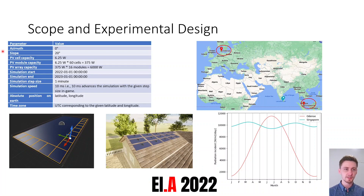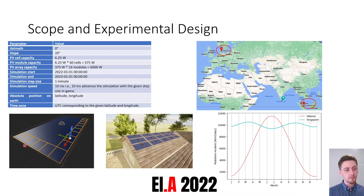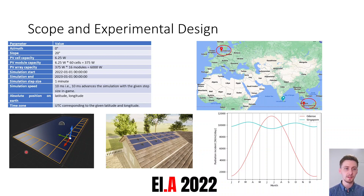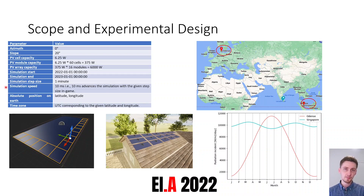The experimental design consists of a range of parameters. The azimuth was set to 0 degrees — true south by convention — which is optimal for locations above the equator. The slope was set to 20 degrees, not optimal but fitting the rooftop. Each PV module was designed in Unreal Engine 5 with 6 by 10 individual cells, totaling 60 cells, and a capacity of 375 watt-peak under standard test conditions, typical for commercially available modules. The simulation duration was set to one year, with a step size of 1 minute and simulation speed of 10 milliseconds.